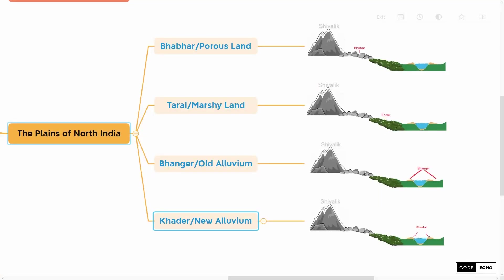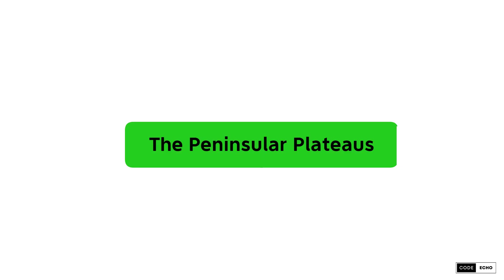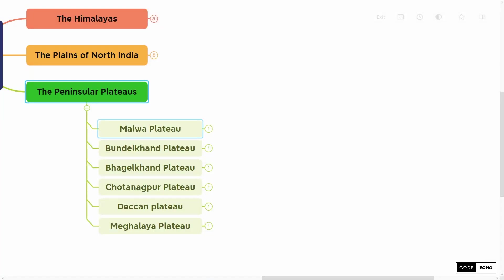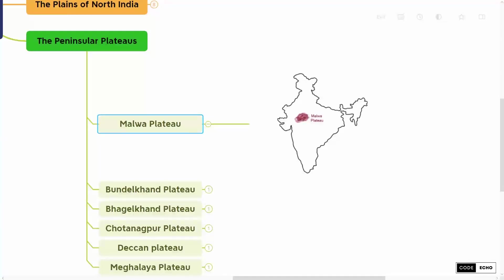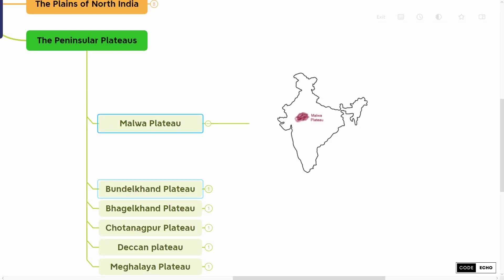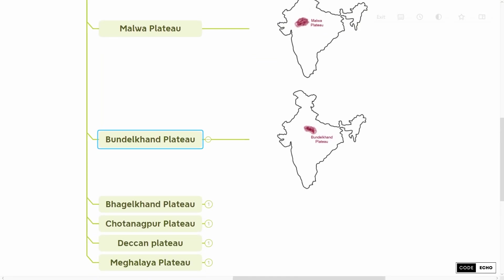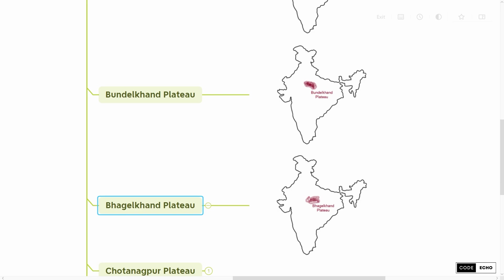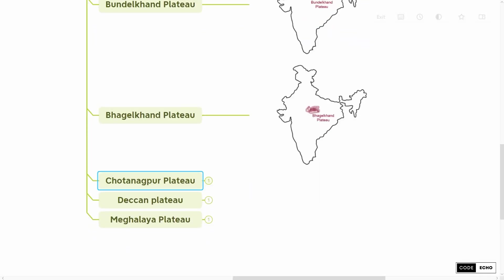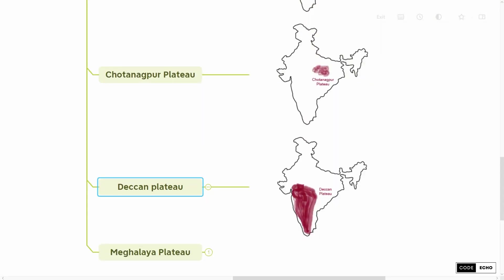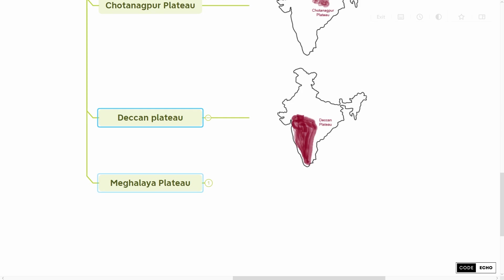Now moving on to another Physiographic Division, that is the Peninsular Plateaus. The Peninsular Plateau has six subdivisions in it. The first one is Malwa Plateau, the second one is Bundelkhand Plateau, the third one is Bagelkhand Plateau, the fourth one is Chotanagpur Plateau, the fifth one is Deccan Plateau, and the last one is Meghalaya Plateau.